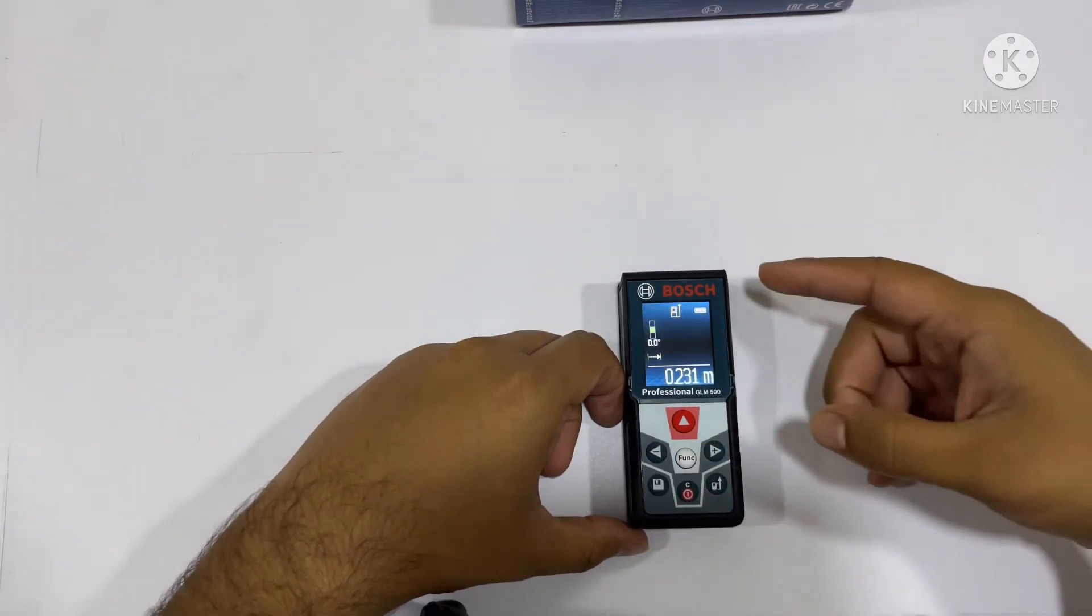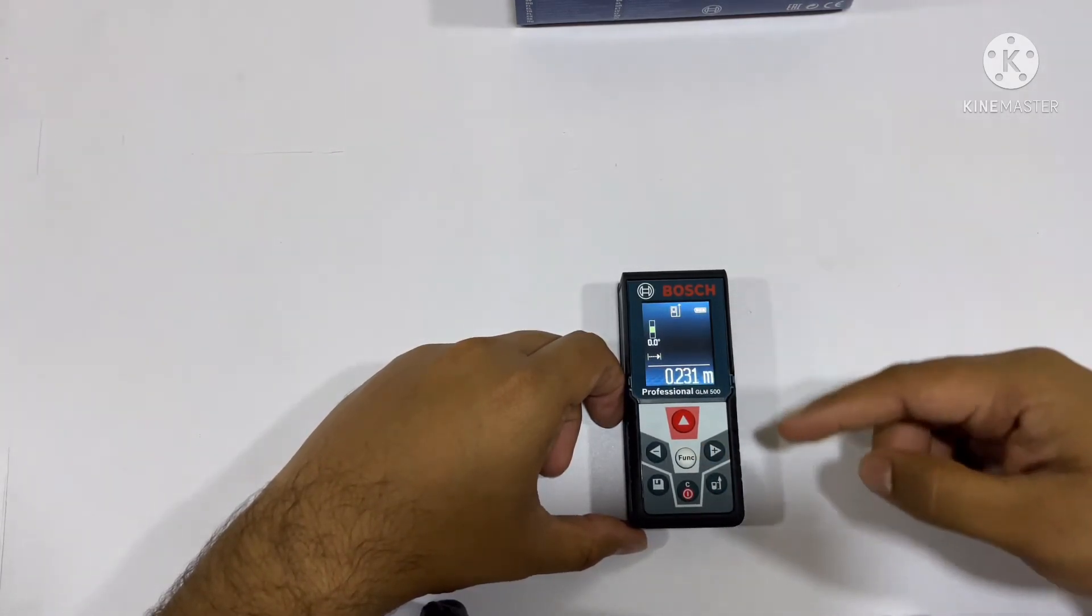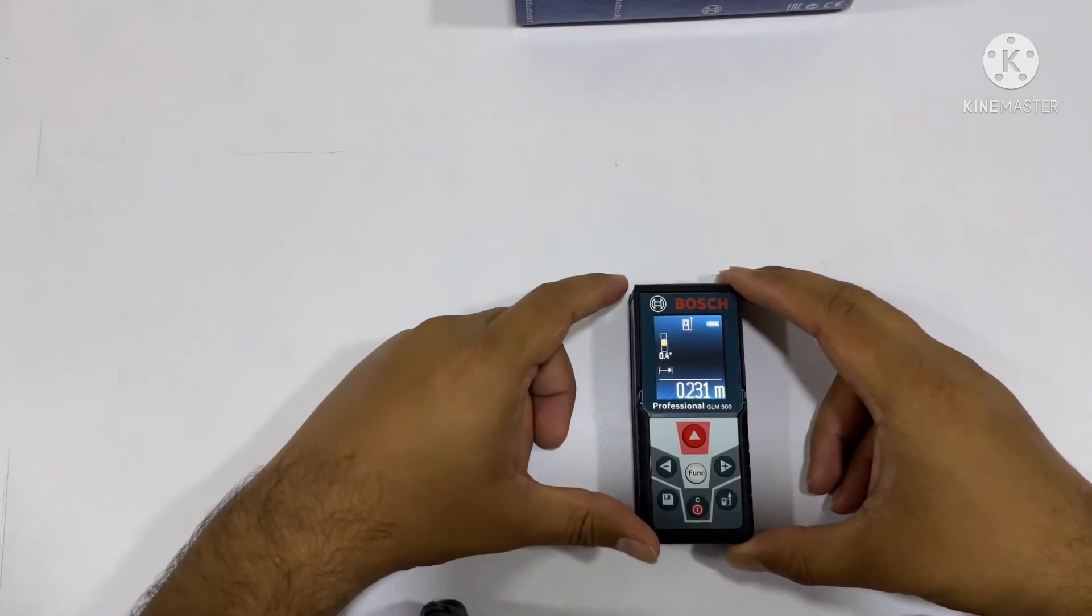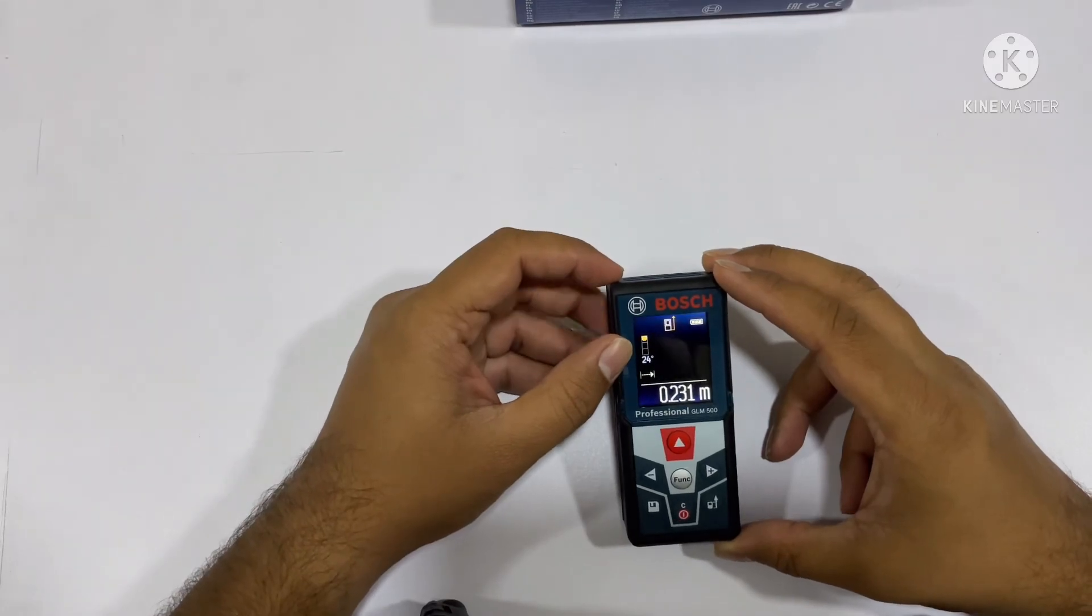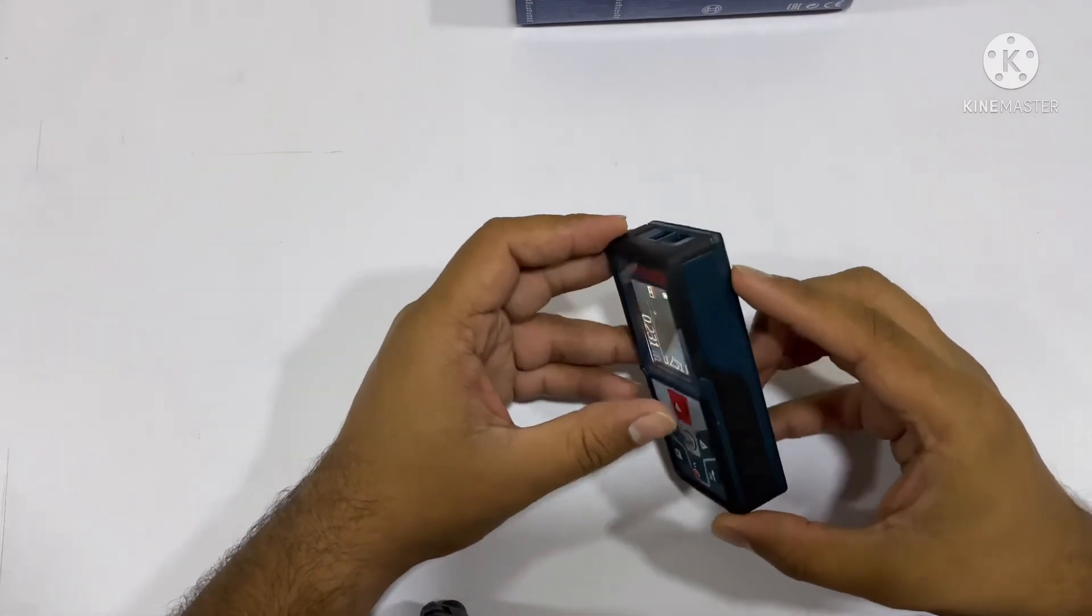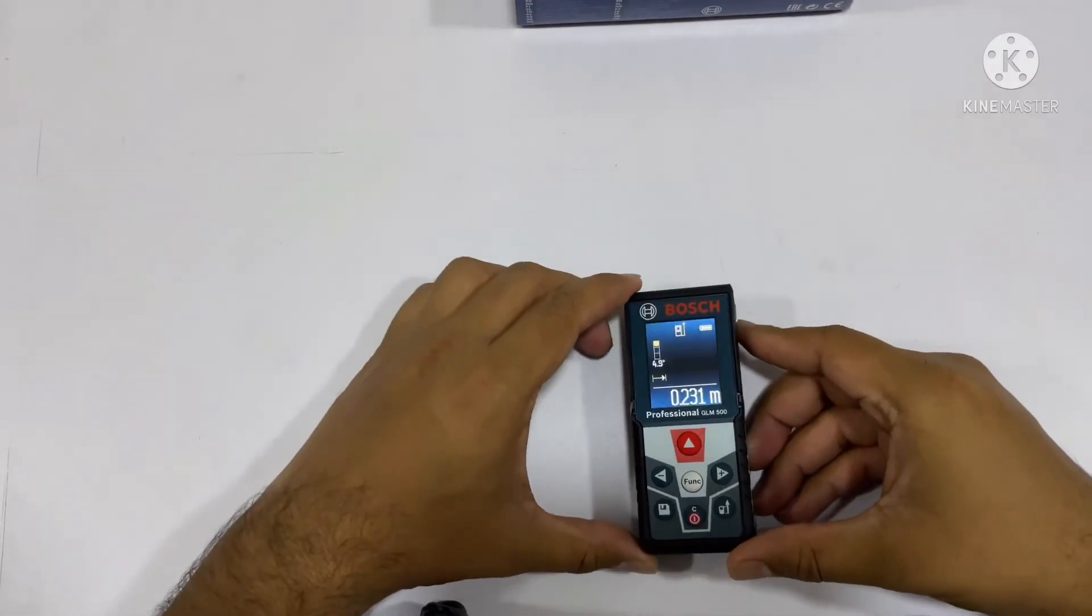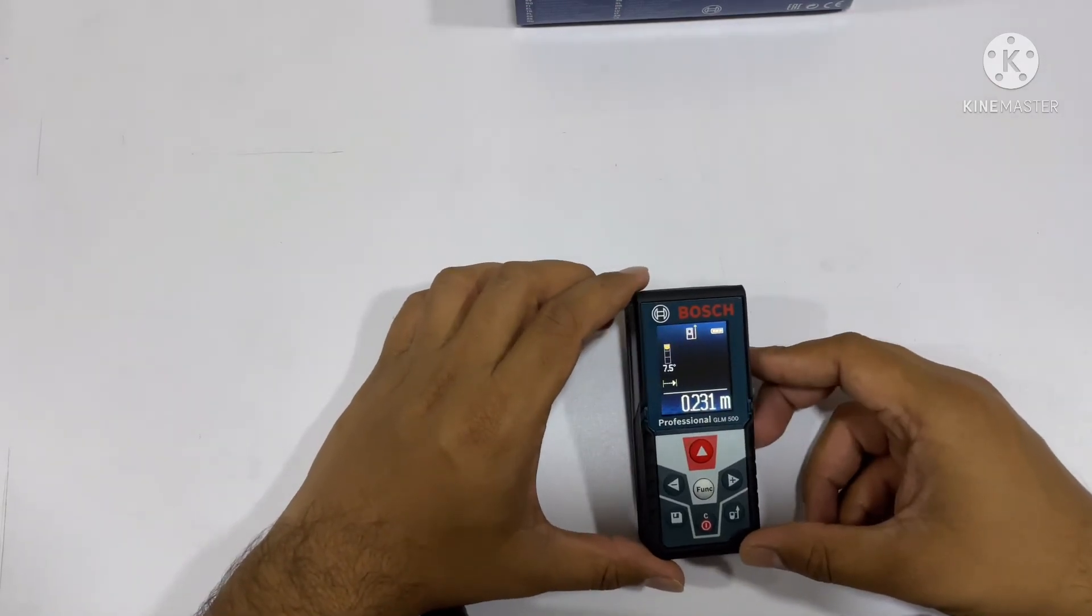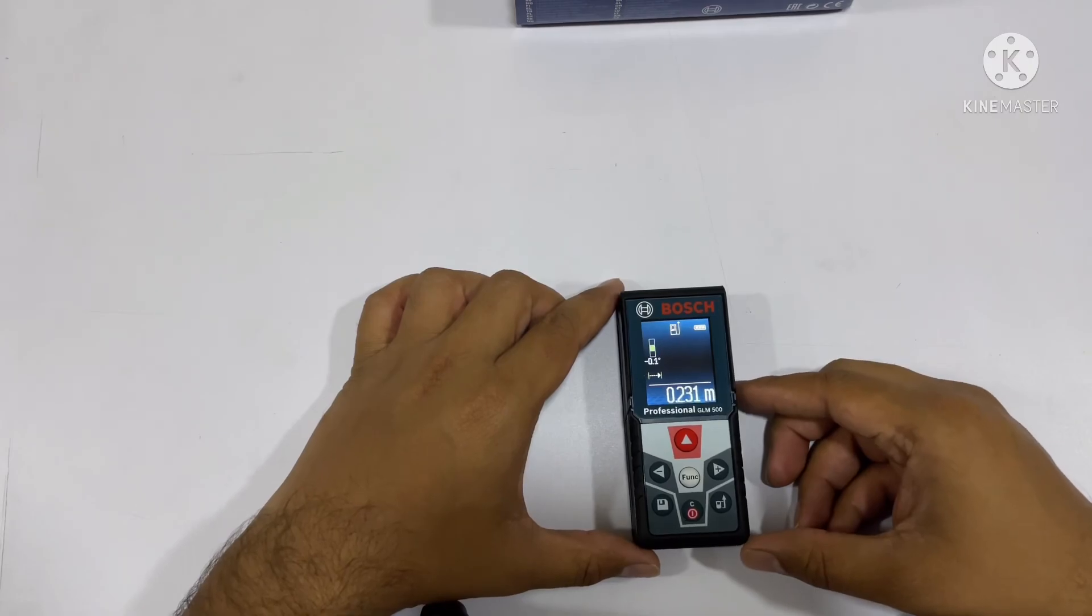So this is the difference between this position and this position. This is the short review that we have today for you, Bosch Professional GLM 500 laser measuring unit. I hope you like it. If you like it, please subscribe and share this channel. Your support is always needed. Thank you so much.